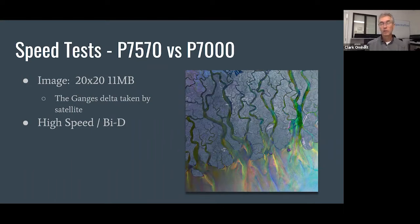This is just an image I found of the Ganges Delta taken from space, it's kind of colorful and interesting. It's 20 by 20 inches, 11 megabytes. I tested a variety of resolutions, but all these resolutions were set to high speed bi-directional, which is what we usually print at.